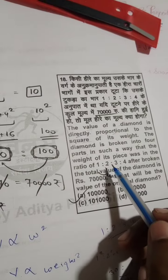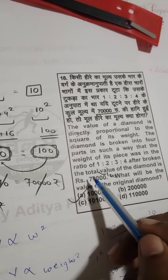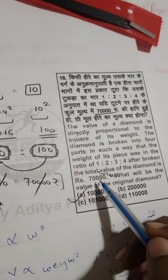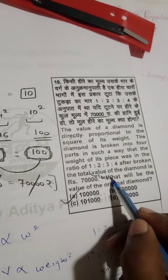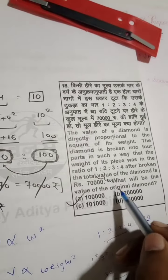1:2:3:4. After breaking, the total value of the diamond is Rs. 70,000. What will be the value of the original diamond?